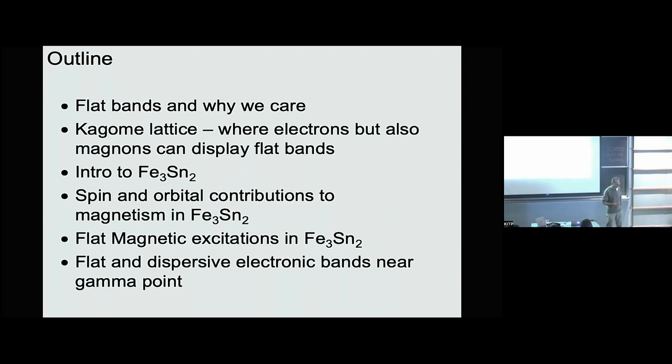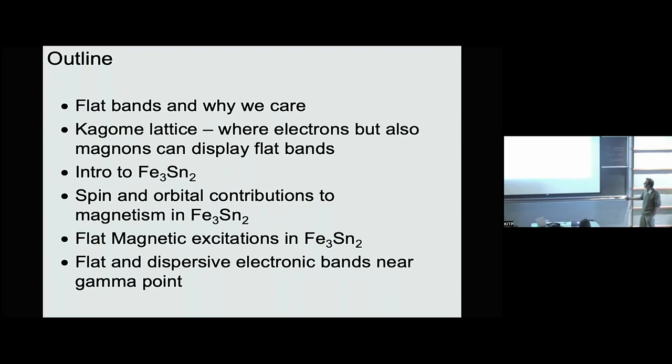You heard a very nice talk before the break about flat bands and why we should care, so I won't spend too much time on that. I'll introduce a system that we're working on which is a very close relative of the ones that Linda introduced earlier — in this case it's iron 3Sn2. Then I will talk about the details of the magnetism that we wondered about but really didn't have until we started doing various x-ray experiments. And if I have time, I'll talk about bound state formation near the gamma point due to a crossing between flat bands and a dispersive band at the Fermi surface.